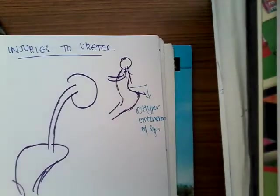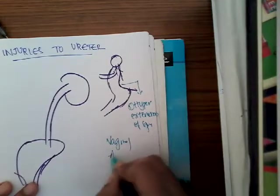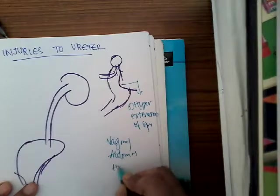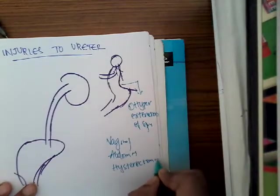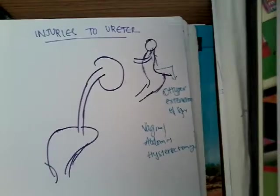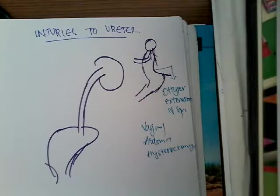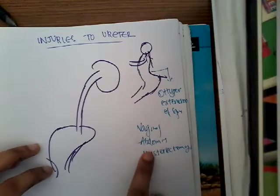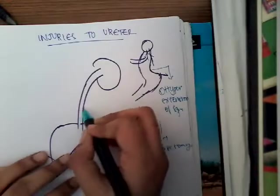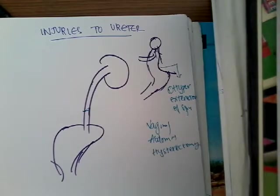The second cause is whenever there are vaginal or abdominal surgeries, most commonly hysterectomies. The uterine artery and the ureter are near to each other. As a result, instead of ligating the uterine artery, sometimes the gynecologist may inadvertently ligate the ureter. So that can also result in ureteric injury.